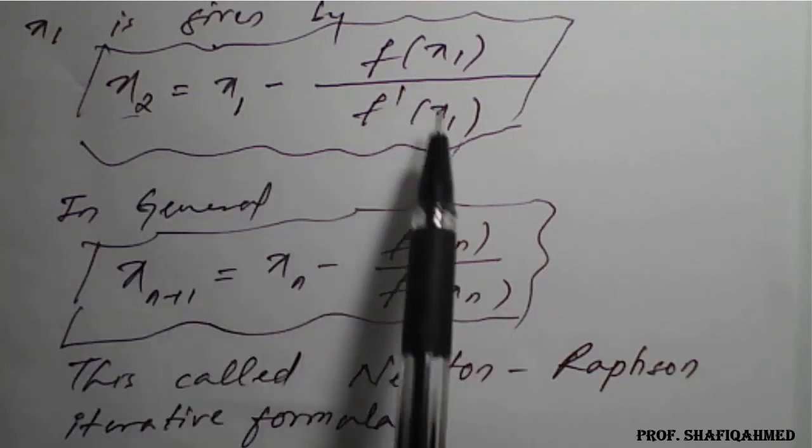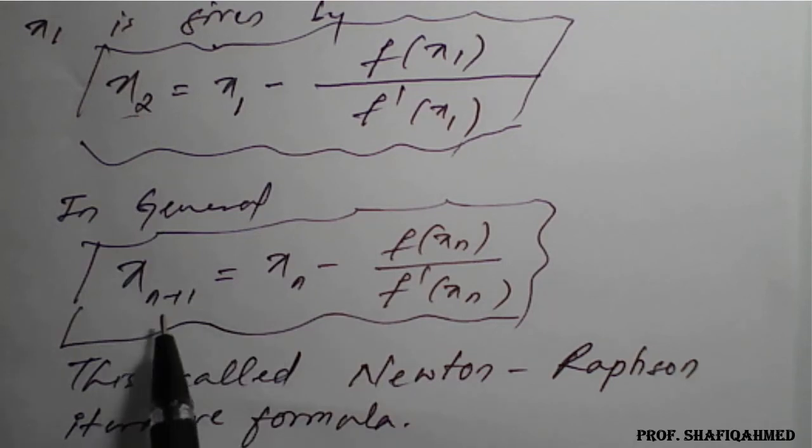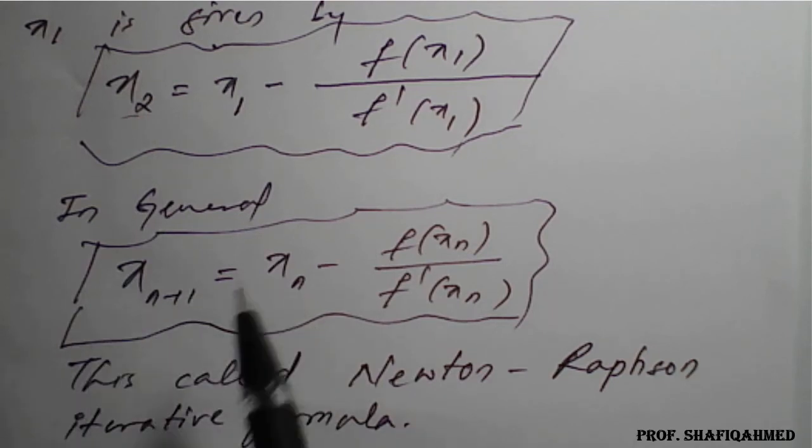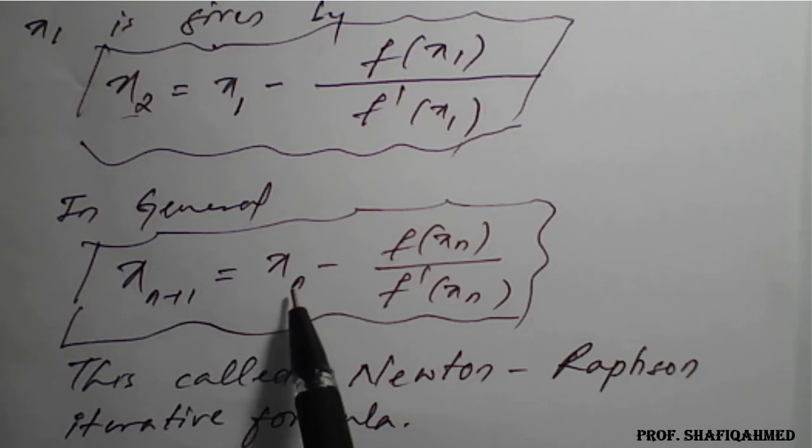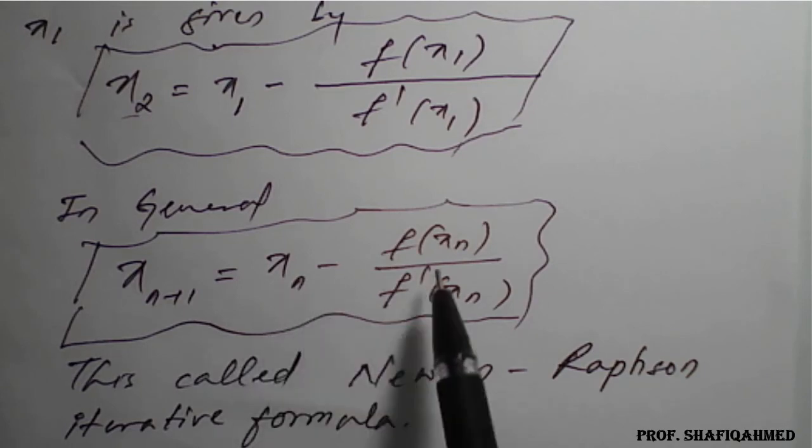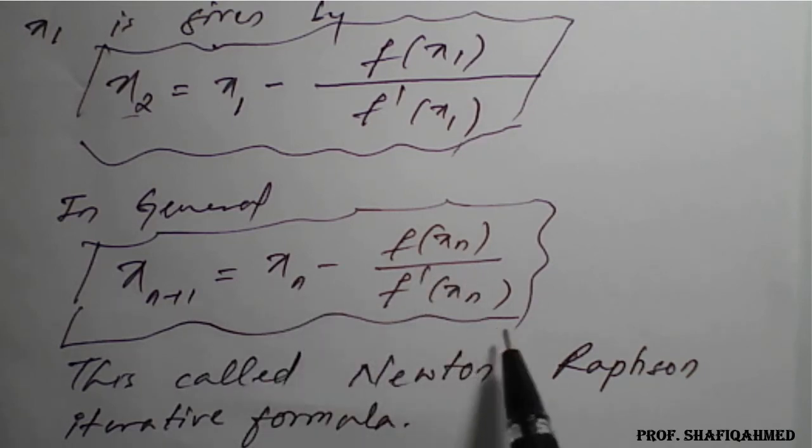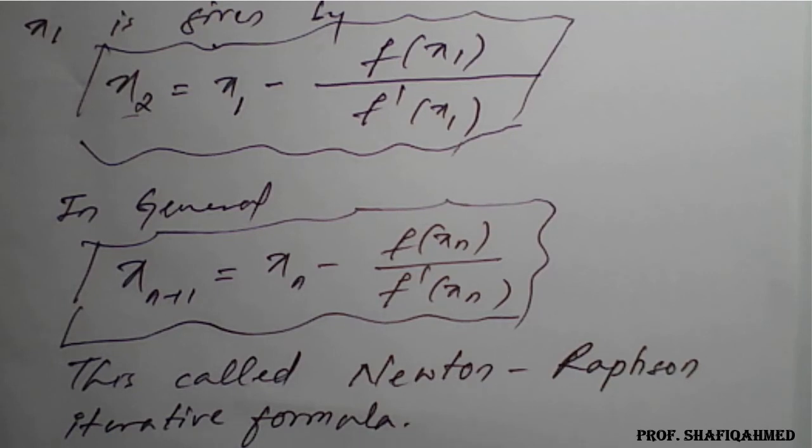Similarly, for the fourth iteration: x₄ = x₃ - f(x₃)/f'(x₃), and so on. This is the iterative method to get results.